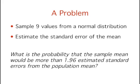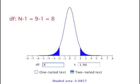Let's think about an example problem. Suppose we sampled 9 values from a normal distribution and estimated the standard error of the mean. What is the probability that the sample mean would be more than 1.96 estimated standard errors from the population mean? First, we determine the degrees of freedom. The formula, which you'll hear more about later, is n−1. Our sample size is 9, so we have 9−1, which equals 8 degrees of freedom. The t-distribution calculator can then be used to find that with 8 degrees of freedom, 8.57% of the area of a t-distribution is more than 1.96 estimated standard errors from the population mean. Recall that this is more than for a normal distribution, where 5% of the area is more than 1.96 standard deviations from the population mean.